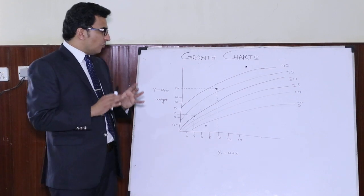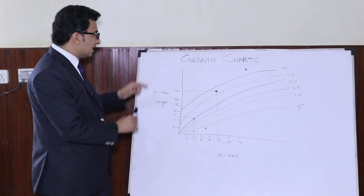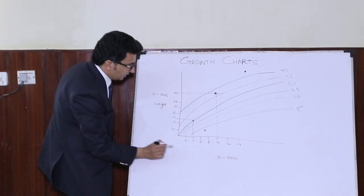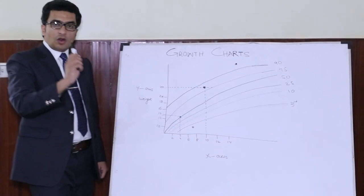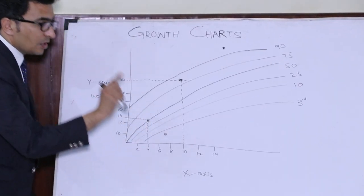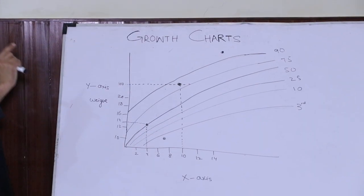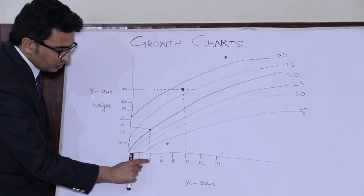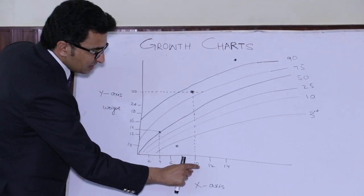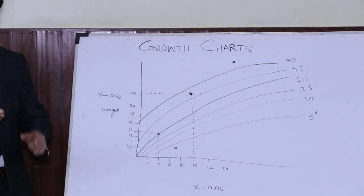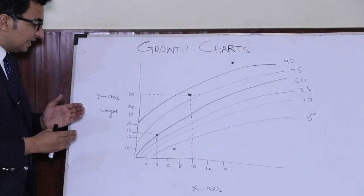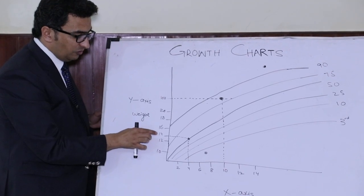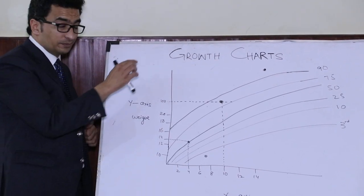First of all, understand that in a growth chart you will have two axes. One is the x-axis and the other is the y-axis. On the x-axis there will always be different ages already plotted, like two years, four years, six years, eight years, ten years, and so on. On the y-axis there will always be weights already plotted, for example 10 kg, 12 kg, 14 kg, 16 kg, and so on.